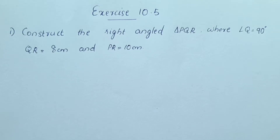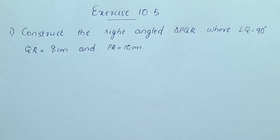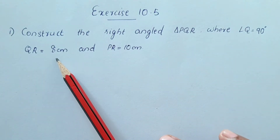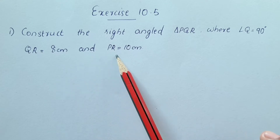We are doing exercise 10.5. First question: construct the right-angled triangle PQR where angle Q is equal to 90 degrees, QR is equal to 8 centimeters.